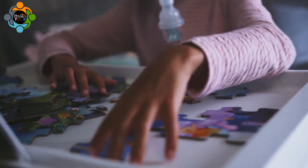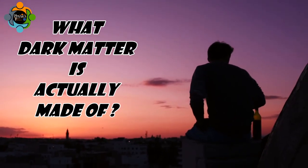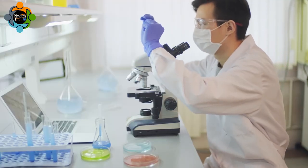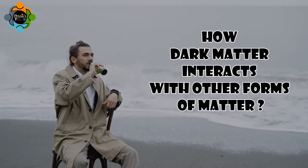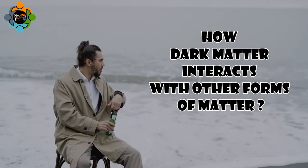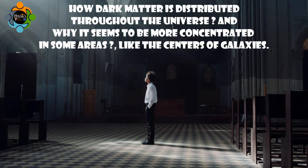There are several mysteries related to dark matter. One of the biggest mysteries is what dark matter is actually made of, and it doesn't seem to be made up of the same particles as normal matter. Additionally, it's unclear how dark matter interacts with other forms of matter, since it does not emit, absorb, or reflect light. Another mystery is how dark matter is distributed throughout the universe.